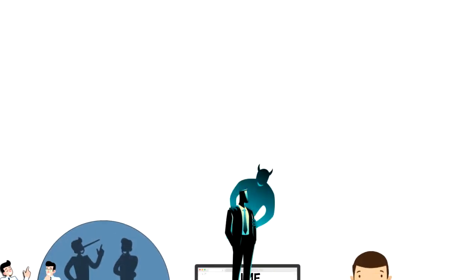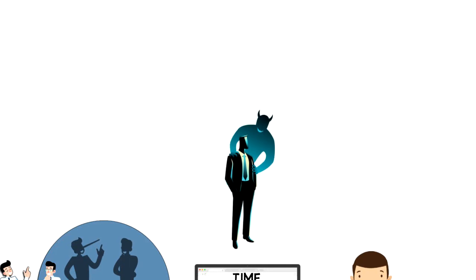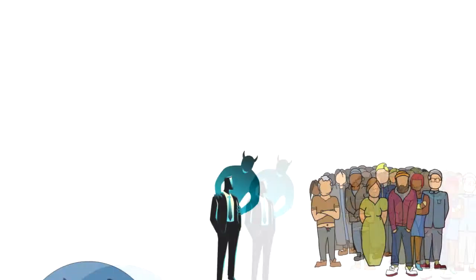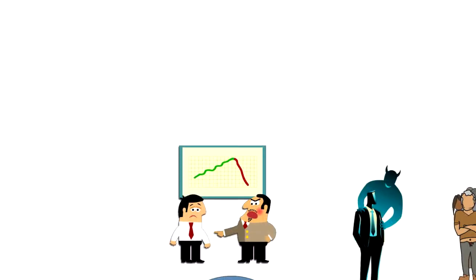Super ego is a part of the person's mind that acts as a self-critic, reflecting on social standards learned from parents, teachers, and society. Sometimes when we want to do things that are not appropriate, there is something inside of us that is holding us back.